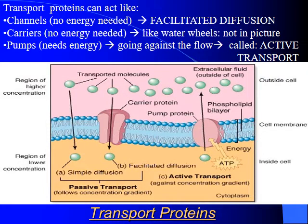There are different types of transport proteins, and they can be classified by whether or not they actually require the cell to spend energy to make them work. Certain proteins require no energy at all to help transport things from one side to another — going from high concentration to low concentration. All the protein is doing is creating a specific channel for that molecule to get across. That's called passive transport, because it follows the concentration gradient from high to low and requires no energy from the cell.